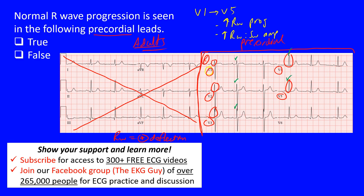We want to see these R waves increase in amplitude from V1 to V5. You can see that's certainly going on here. Notice that the amplitude is increasing as we keep going through. What we would call that is, in fact, normal R wave progression. So this is true.